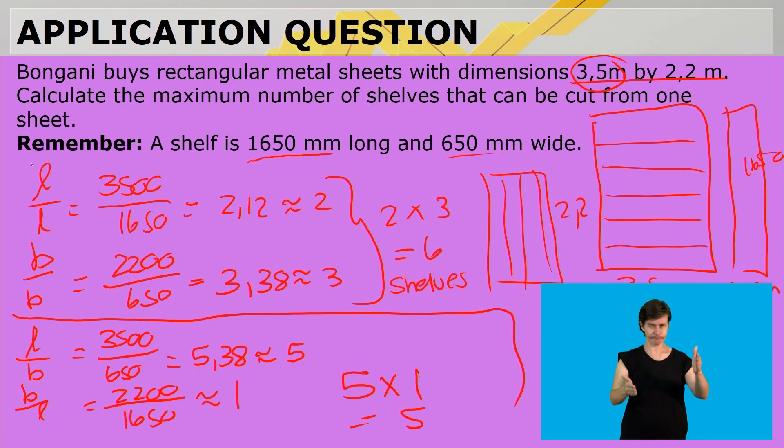So meaning, if we pack the length and the length towards the width and the width, we can use 6 shelves, we can get 6 shelves, and therefore, that will be the maximum 6 shelves.